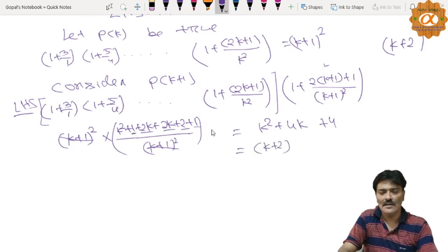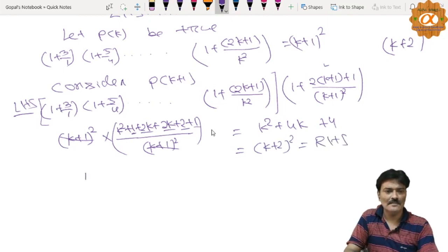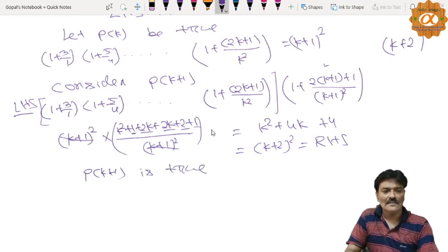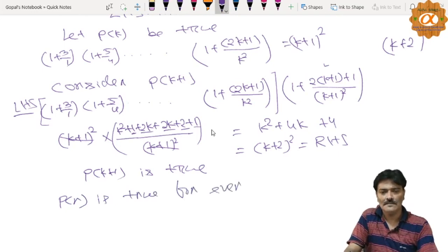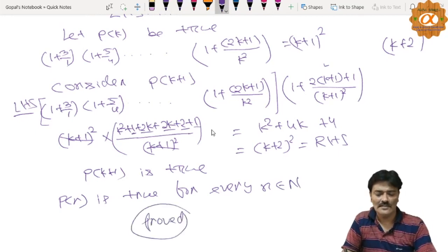And this is our RHS. That means P(k+1) is true. Okay, now that means P(n) is true for every n belongs to N. That means P(n) statement is true.